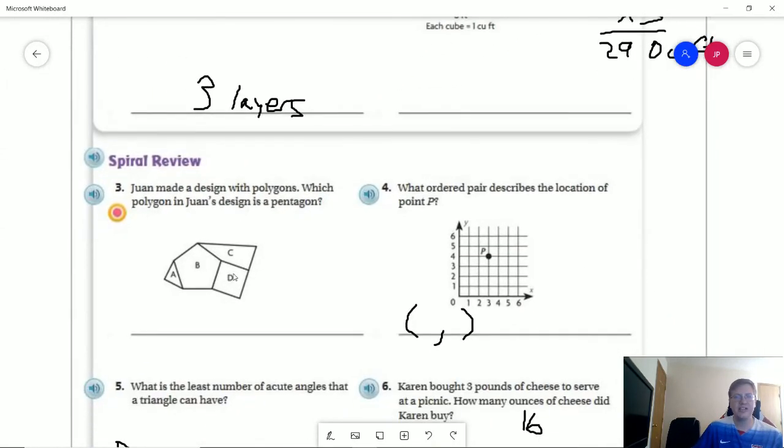Number three, our design is made up of polygons. The one that would be a pentagon would be B.